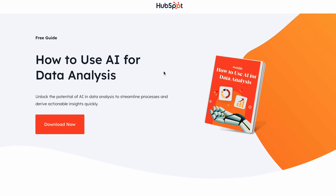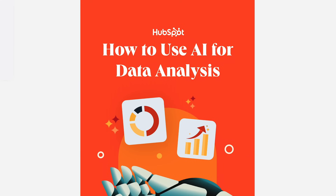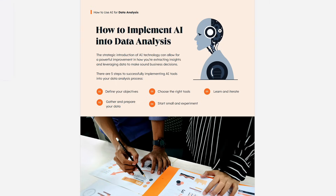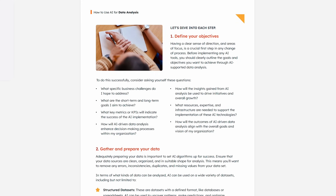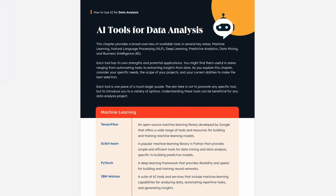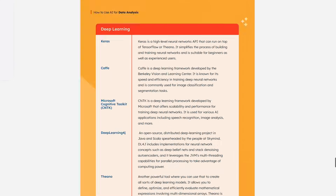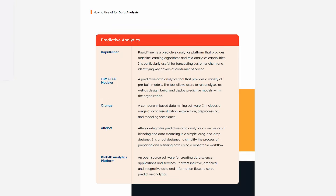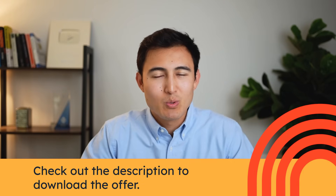Speaking of AI in Excel — if you're looking to leverage AI for data analysis, I recommend checking out HubSpot's free AI for Data Analysis guide. It's a 20-page PDF completely free to download via the link in the description. It covers an in-depth breakdown of data analysis, how AI enhances analytical capabilities, key benefits and challenges, and categorizes AI tools by area to help you find the right one for your needs. Thanks to HubSpot for sponsoring this video.